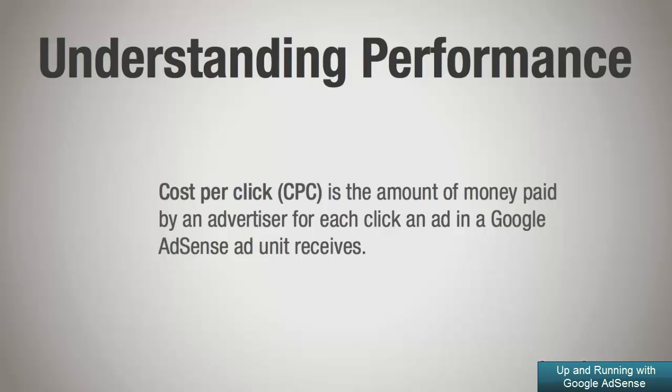Cost per click is the amount of money paid by an advertiser for each click an ad receives in a Google AdSense ad unit. So every time somebody clicks on an ad on your website, an advertiser is paying a certain amount of money for that specific click. When we take a look at the performance reports within Google AdSense, we can see what our average cost per click is.